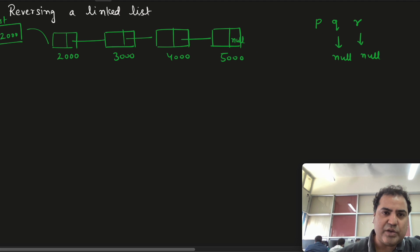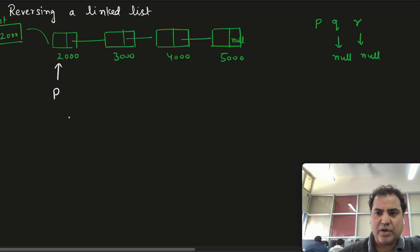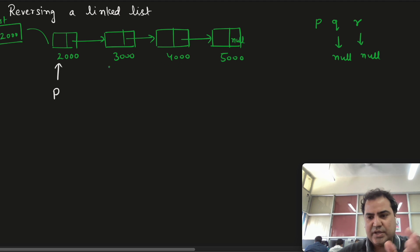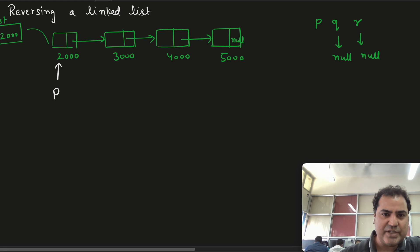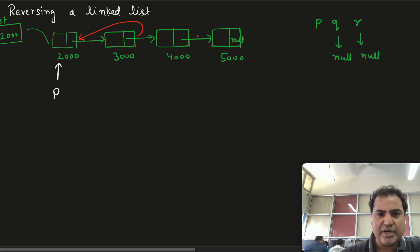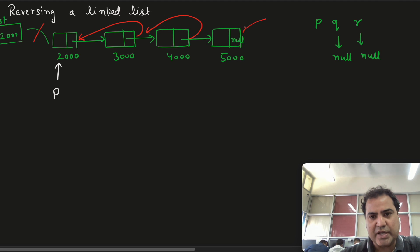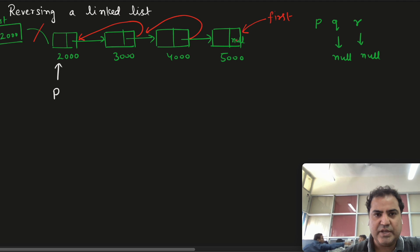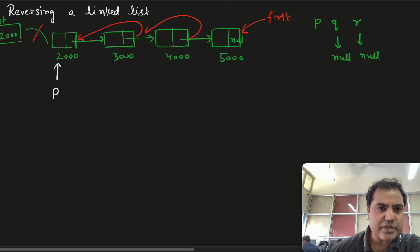p will be pointing to the first node. What I want to do is change the links — in this linked list the pointers are pointing in one direction. I want to reverse the links: this should link here, this should link here, and first should point to the last node. That is our basic procedure.